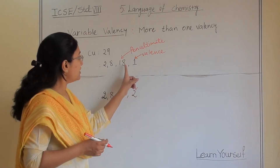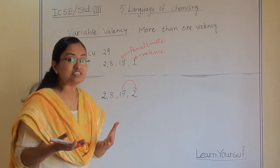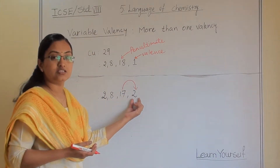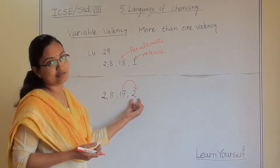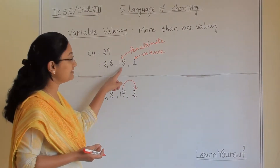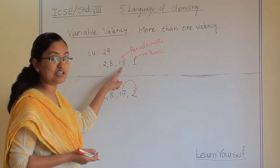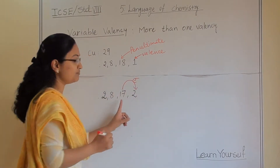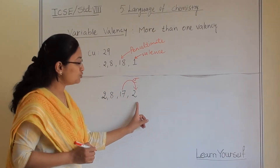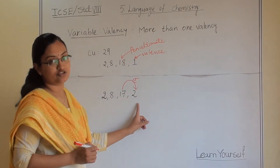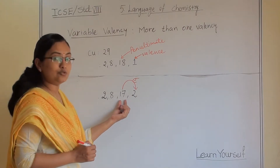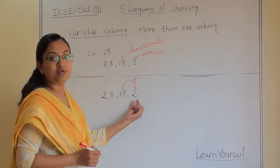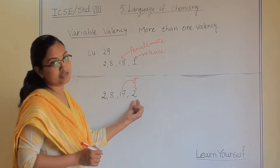So copper will become more stable if in the last shell there are 2 electrons. So what will happen is — there are 18 electrons in the penultimate shell — one electron will jump from the penultimate shell to the last shell. So the 18 will become 17, and the 1 electron in the valence shell will become 2 electrons.